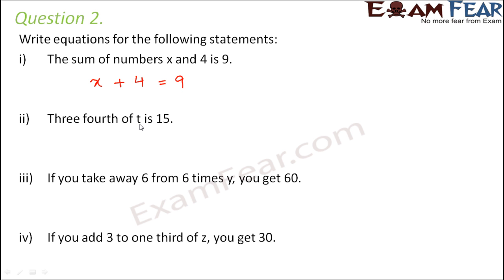3 fourth of t is 15. What do we mean by 3 fourth? It means 3 by 4 of something, 3 by 4 multiplied by something. What is that something? That something is the variable t. So 3 by 4 of t is equal to 15.